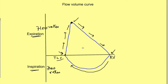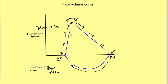To understand this we need to understand the concept of dynamic flow limitation. This is important because in diseases like COPD, this maximum flow rate will not be reached despite whatever force the person applies. So let us see what dynamic flow limitation is.